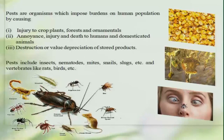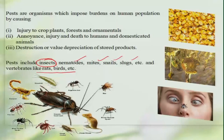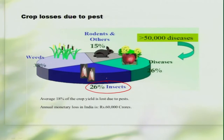The pest can be anything, not only insects — it can be a nematode, mites, snails, slugs, etc., and even mammals like rats and birds. But in this course we are mainly concentrating on insects as a major pest. Now, what is the extent of the loss that an insect can cause? Along with other groups of organisms, insects are believed to contribute nearly 26 percent of the loss to the cropping ecosystem.